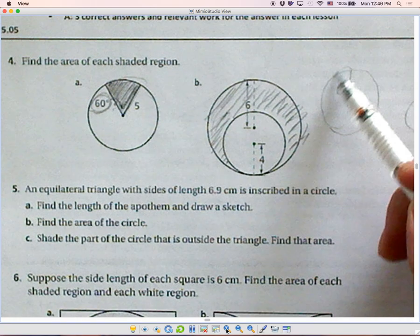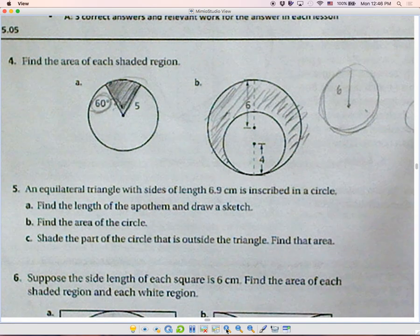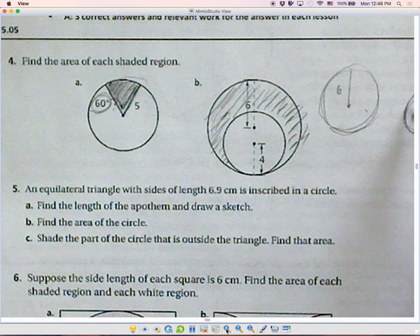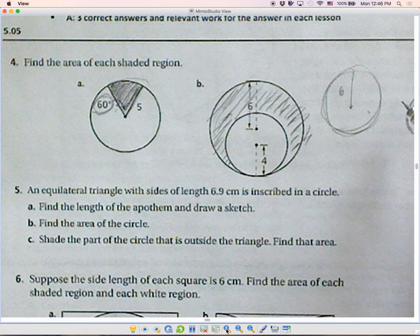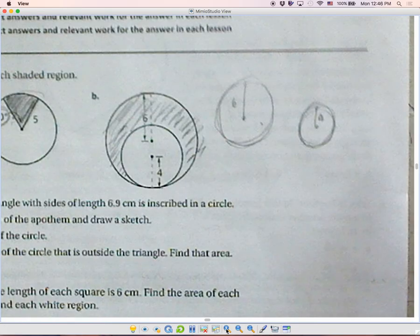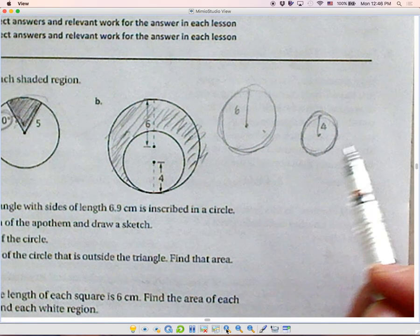Do you see that? If you find the area of this big circle, then find the area of the small circle, do something about it. Add, subtract, multiply, divide, whatever, so that you get this shaded area.